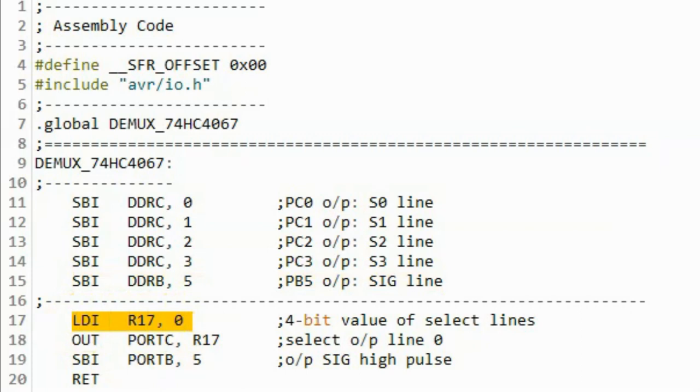Register R17 is used to store the 4-bit value of the select lines; here the value is 0, meaning we want to select output line 0. This R17 value is sent to port C to select output line 0, then via pin PB5, a logic 1 is sent to the signal line so the result appears on the output LED display.